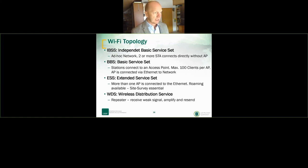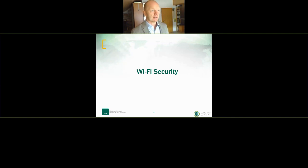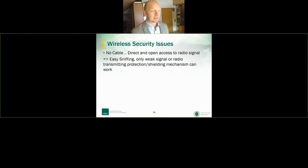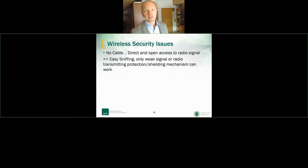WDS — Wireless Distribution System — also receives weak signals and retransmits them. These are the main areas of topology in Wi-Fi. Wireless security issues are trivial to state: we don't have any cable, so everyone has open access to the radio signal, making sniffing easy, with only weak signal strength or physical shielding providing some protection.